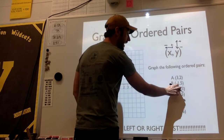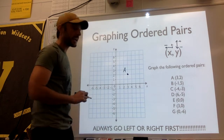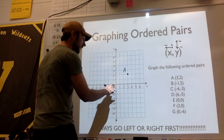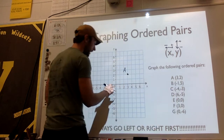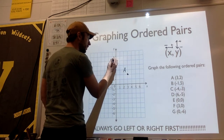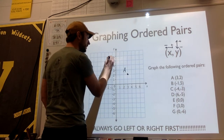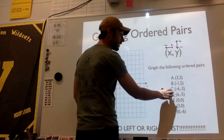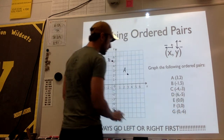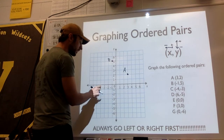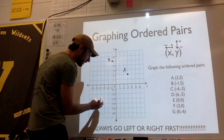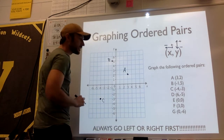B has a negative x-coordinate, which tells me I need to move to the left. So I go left 1, then up 5. Here is point B. My C coordinate is both negative — negative 4 and negative 3 — so I go left 4 and down 3. That is my C coordinate.